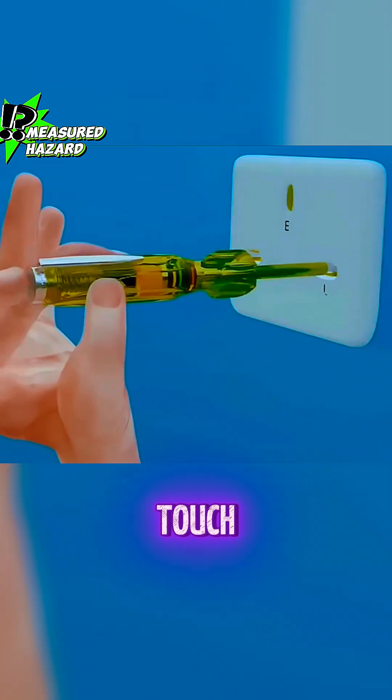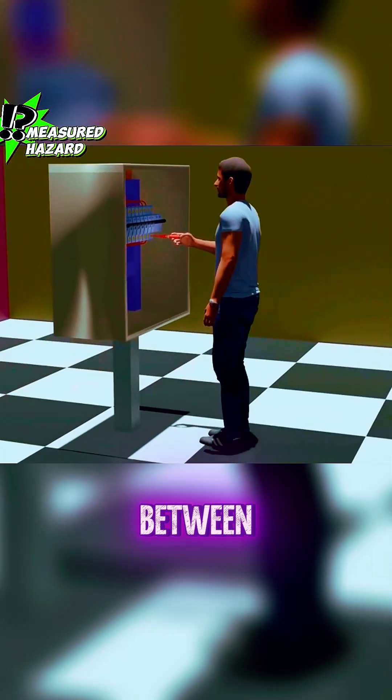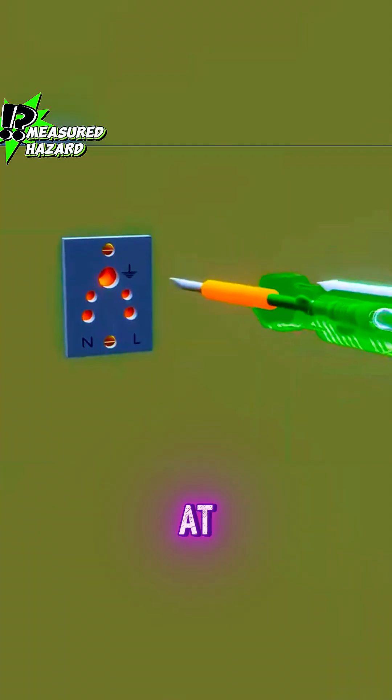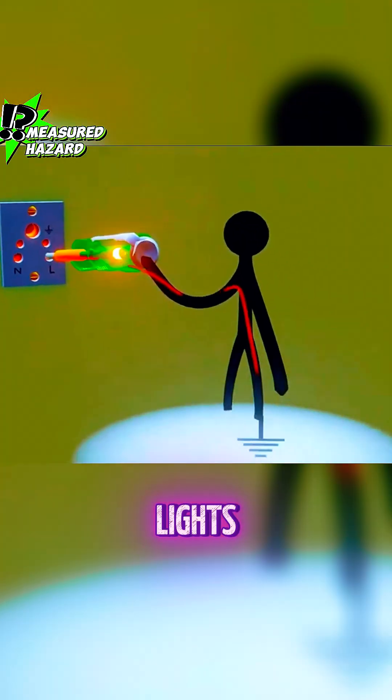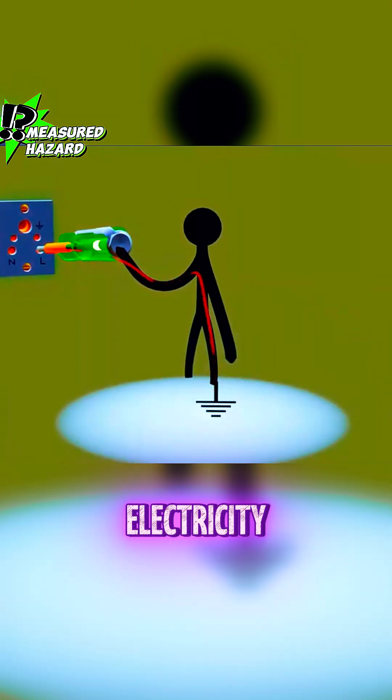However, when you touch the metal end cap, a circuit is formed between the live wire, the test pen, your body, and the ground. At this point, the indicator light in the test pen lights up, indicating the presence of electricity.